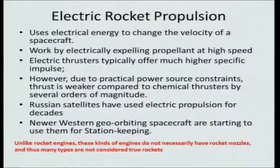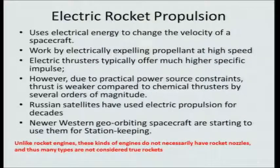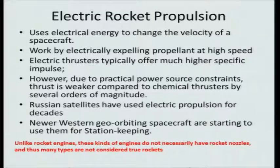However, these devices have their own advantages and specific uses. Russian satellites have used electric propulsion for decades — starting from the 1960s, they have been using electric propulsion systems in their satellites for various applications. Near western geo-orbiting spacecraft or spacecraft designed for deep space applications are starting to use electric propulsion, particularly for station keeping — maintaining the satellite within its course.